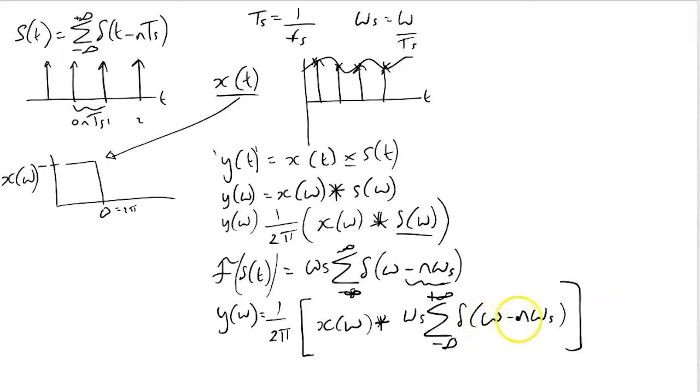What about this expression here: x(ω) convolved with this sum of Dirac delta functions ω minus n·ω_s? We know that if we convolve a signal with essentially a shifted Dirac delta function, then the resultant expression is the same expression but shifted in its own right. If you took x(t) and convolved it with a Dirac delta function shifted by an amount, this would equal x(t - t_1).